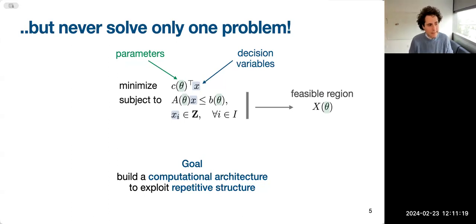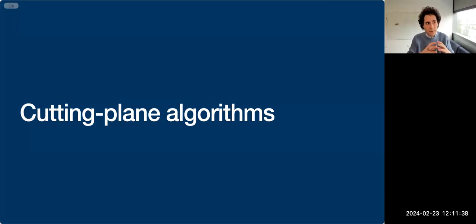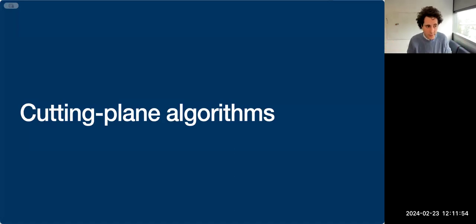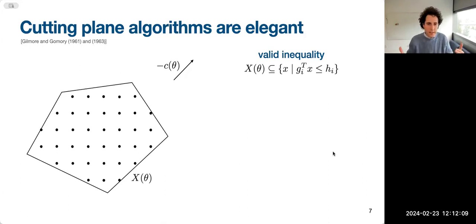We call the feasible region of this problem X(theta). The goal of this line of work is to build a computational architecture that exploits the repetitive structure of these instances — the fact that dimensions often don't change but parameters change in a well-structured way. We use historical data to understand how to build better predictors for solutions that are close to optimal or have low infeasibility. The class of algorithms we focus on are cutting plane algorithms.